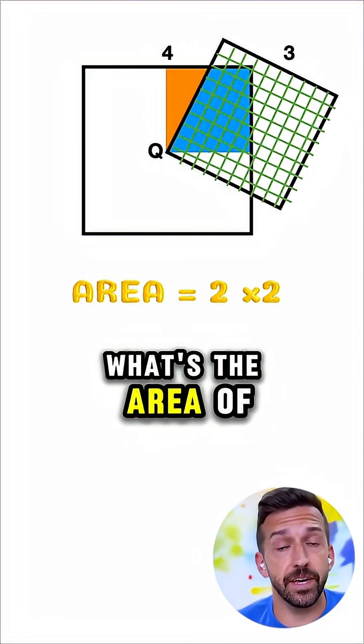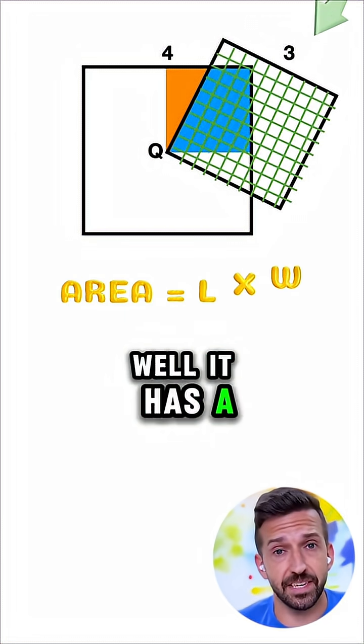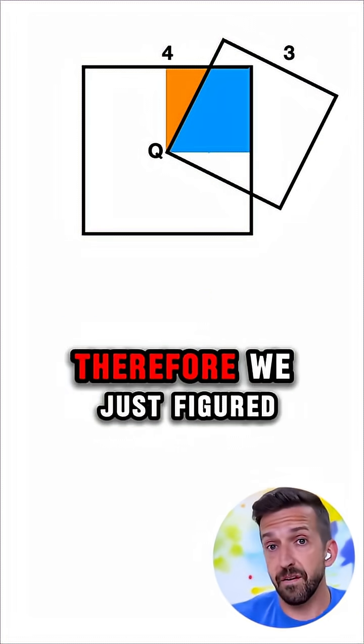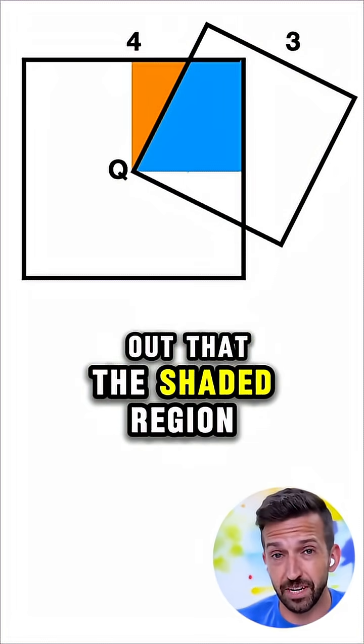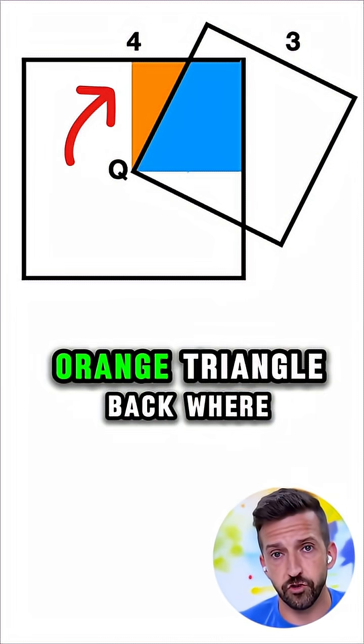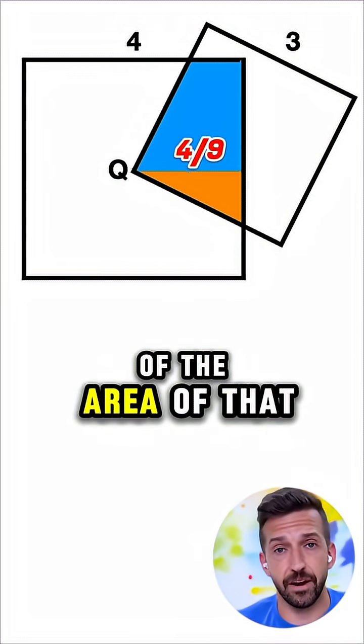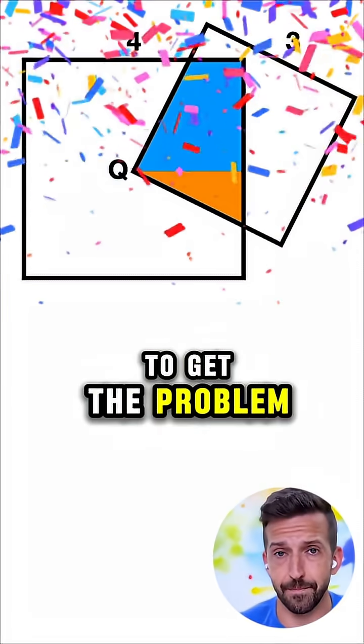Meanwhile, what's the area of the small square off to the side? Well, it has a side length of 3, so its area is 3 by 3, or 9. Therefore, we just figured out that the shaded region, once we put the orange triangle back where it belongs, has an area that is 4 9ths of the area of that smaller square. So there's one way to get the problem.